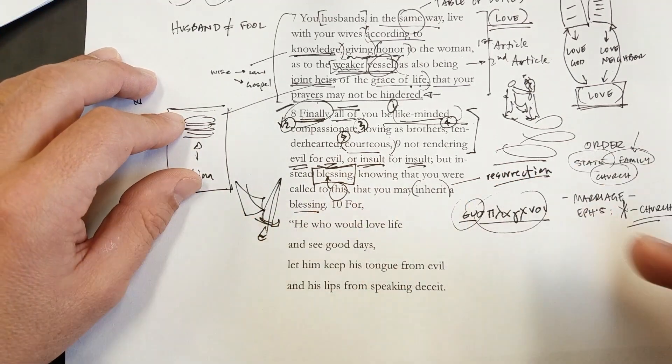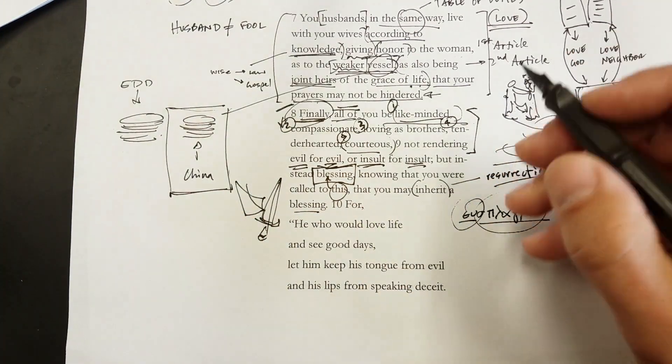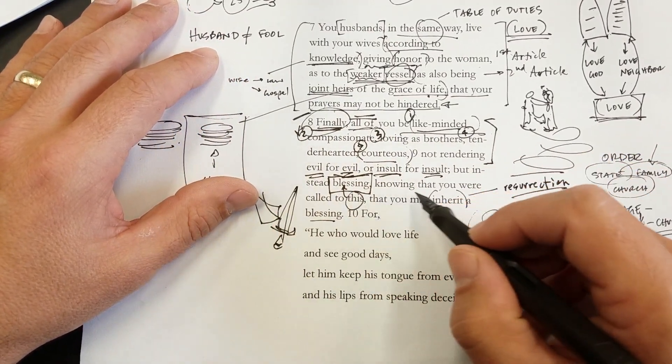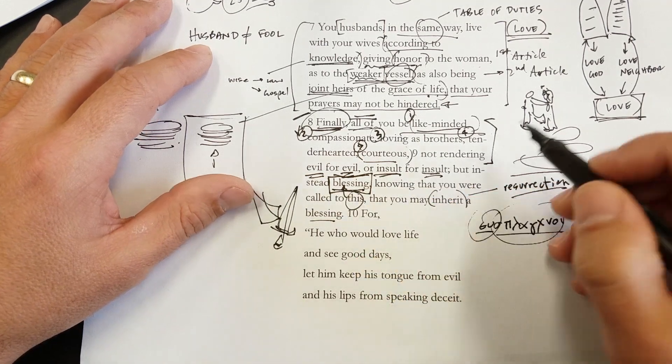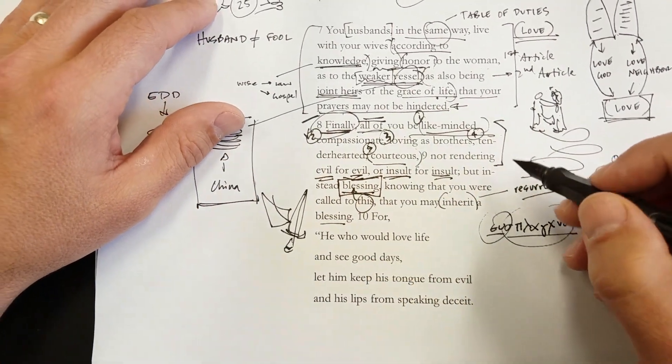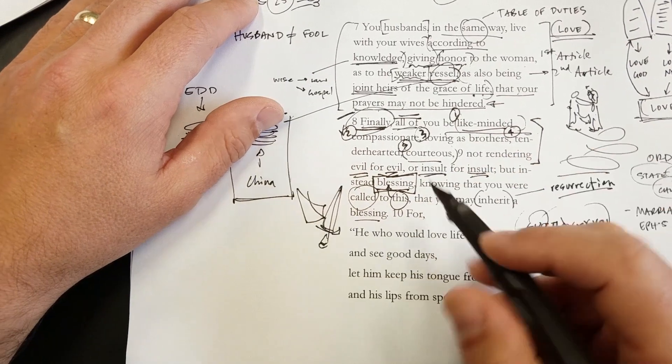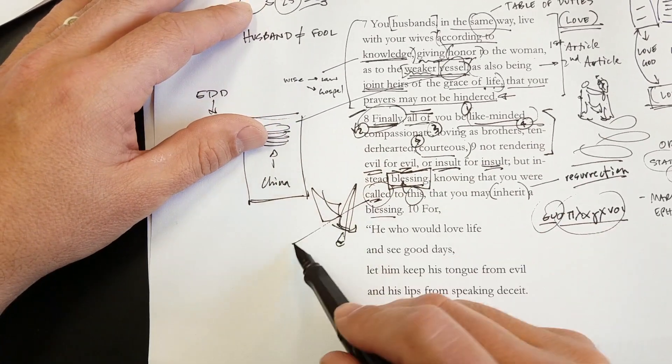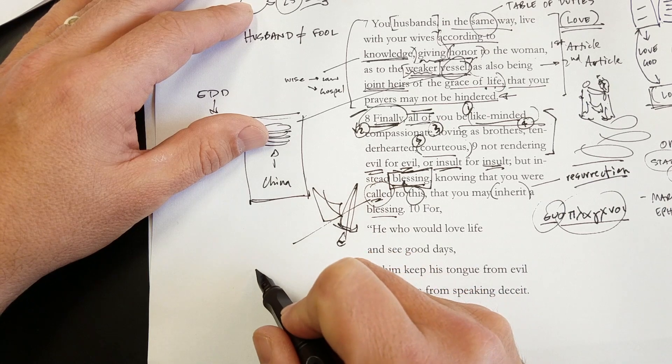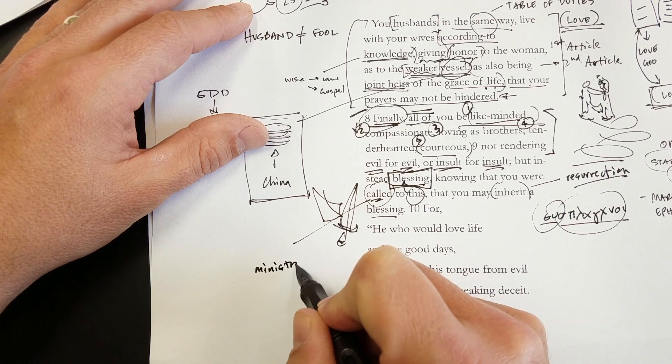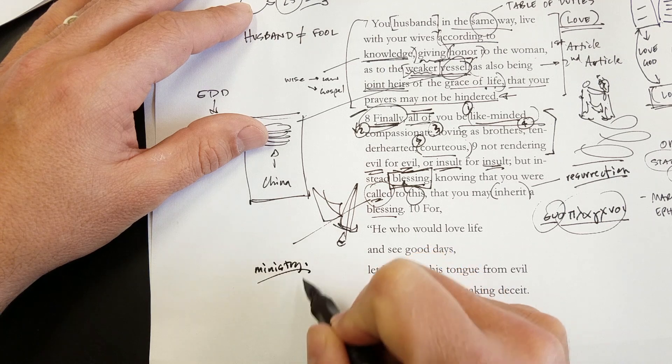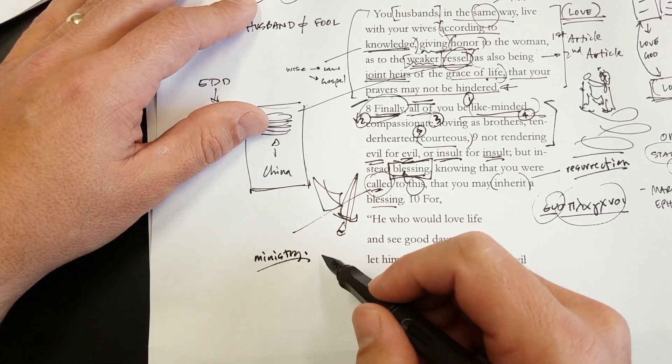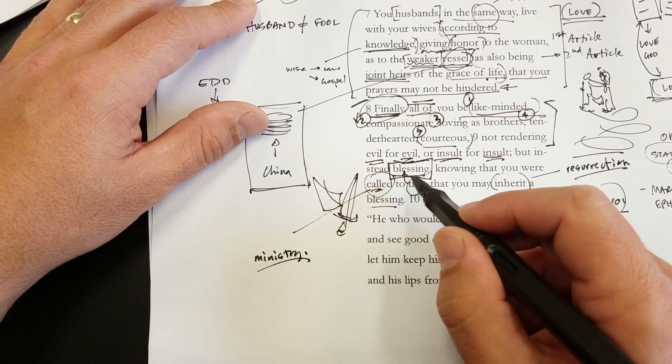This is the question that Christians ask then. How can I bless my neighbor? How can I serve my neighbor? How can I love my neighbor? We were called to this, to be a blessing. Now, one of the things, one of the marks, or one of the confusions that we have, is this word called. We talk about how people have a ministry. And this is probably the wrong way to think.